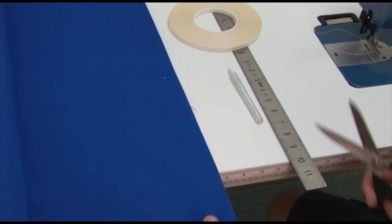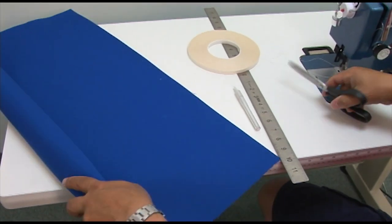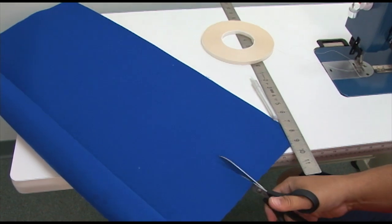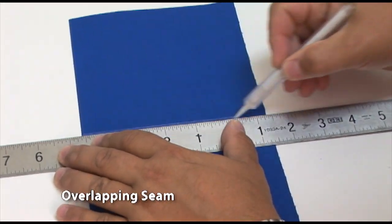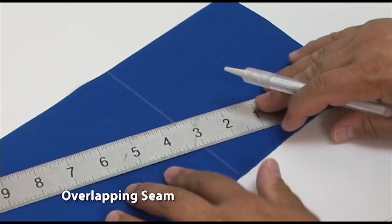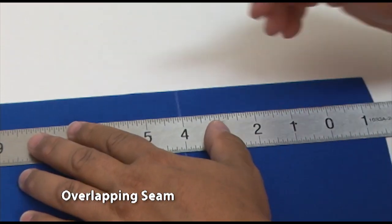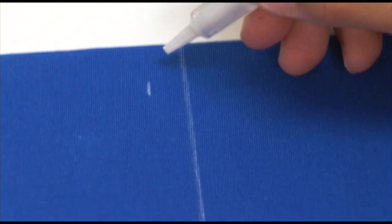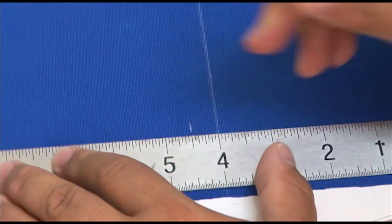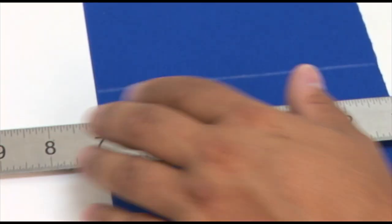First thing we want to do, we're just going to do some small samples here, we're going to show you how to do an overlapping seam. First thing we're going to do is put a nice straight line down. We're going to create a one inch seam here, actually let's just do a half inch seam. So we'll mark a half inch from the line in a couple of spots and create another line.